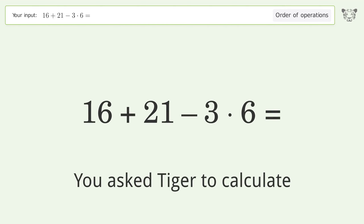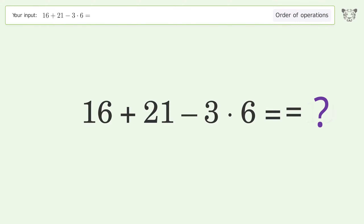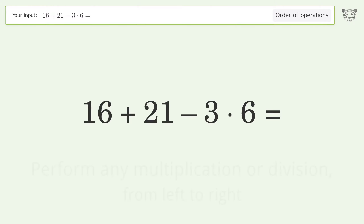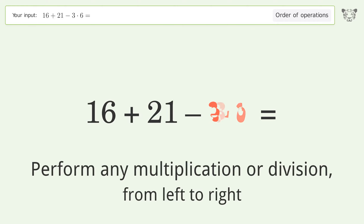You asked Tiger to calculate. This deals with the order of operations — the final result is 19. Let's solve it step by step. Perform any multiplication or division from left to right: 3 times 6 equals 18.